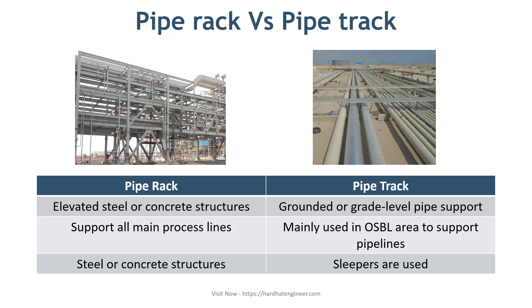These are routed through a pipeline corridor. Pipe slipper mainly uses the OSBL area to support pipelines only.